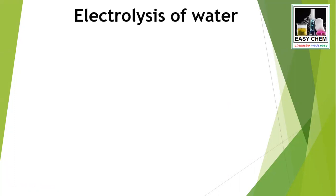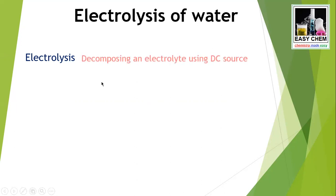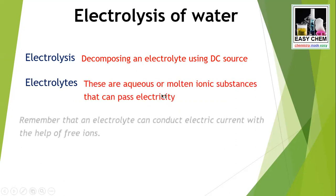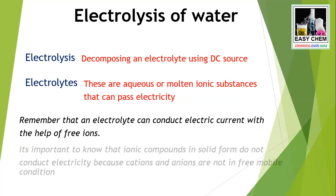When it comes to electrolyzing water or an electrolyte, there are a few things we should realize. The first thing is electrolysis. Electrolysis is decomposing an electrolyte using a DC source. Electrolytes are aqueous or molten ionic substances that can pass electricity. This is not like conductors — conductors are solid substances that can pass electricity, but electrolytes are aqueous or molten.